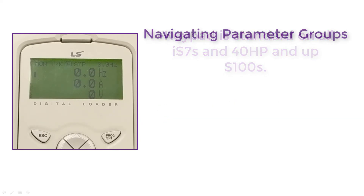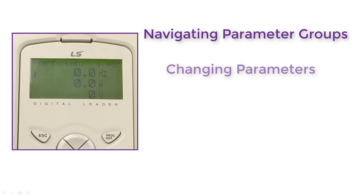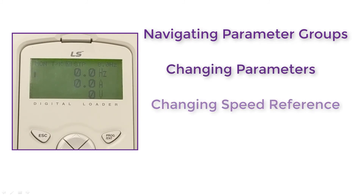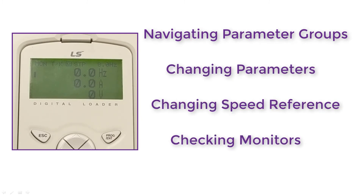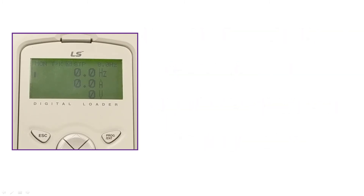Topics covered in this video include navigating the parameter groups, changing parameters, changing a local speed reference, and checking basic monitors. These instructions will be helpful for anyone who works with the LS S100 or IS7 VFDs.